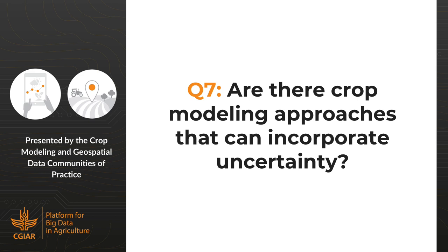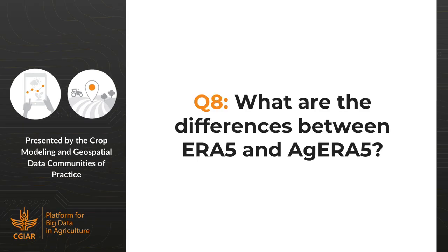On the differences between ERA5 and AgERA5 and whether I prefer one: I don't really have a strong preference. ERA5 requires quite a lot of work if you're not fully familiar with Python programming to get to daily data — we often needed daily data but had hourly data requiring number-crunching. AgERA5 basically does that work for you — you can download daily data directly. I find some parameters a bit more useful in AgERA5, but both are available and very much linked. It's mainly a matter of ease of use.